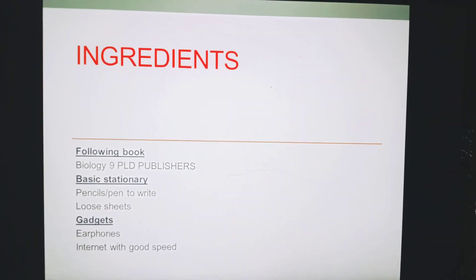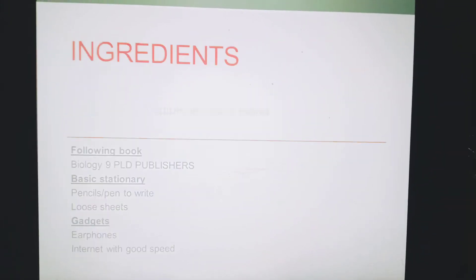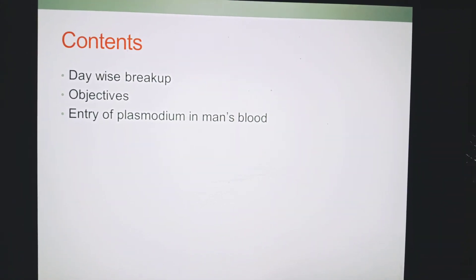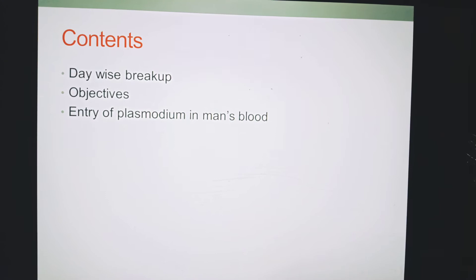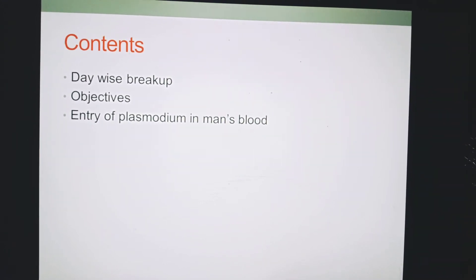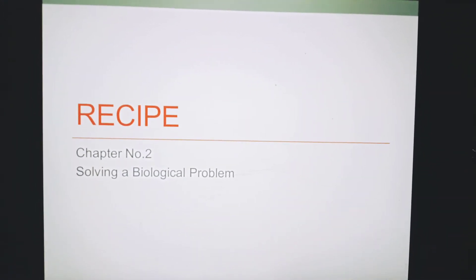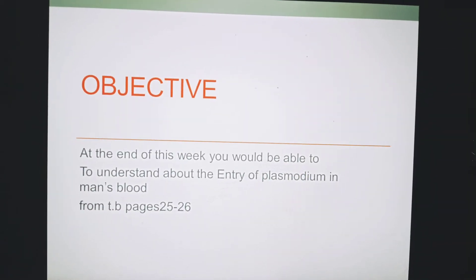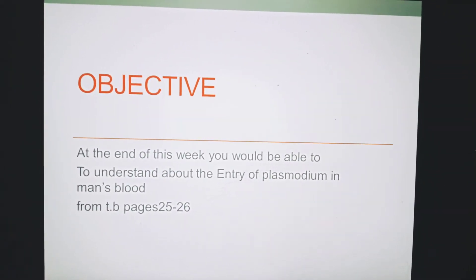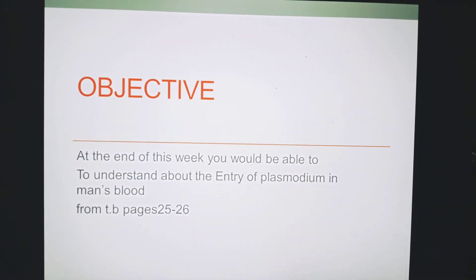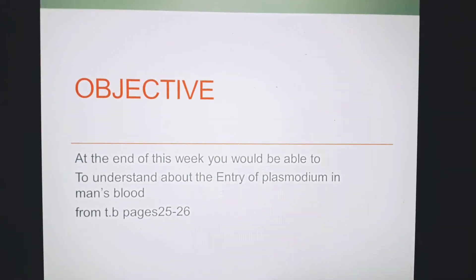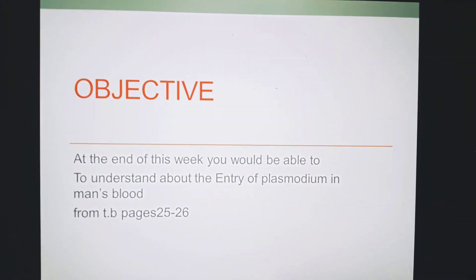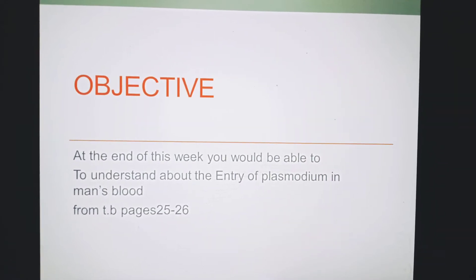You must have the following book, basic stationery and gadgets. Contents include device breakup and objectives. The topic is entry of plasmodium in man's blood. Recipe is chapter number 2: solving a biological problem. The objective is that at the end of this week you would be able to understand the entry of plasmodium in man's blood, from textbook pages 25 to 26.